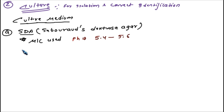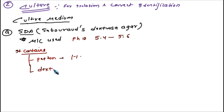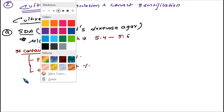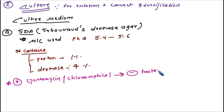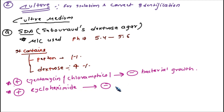The most commonly used culture media is Sabouraud's Dextrose Agar (SDA). It contains two things: peptone at 1% and dextrose at 4%. Its pH is 5.4 to 5.6. We also add antibiotics like gentamicin or chloramphenicol to inhibit bacterial growth, and cyclohexamide to prevent the growth of unwanted saprophytic fungi.